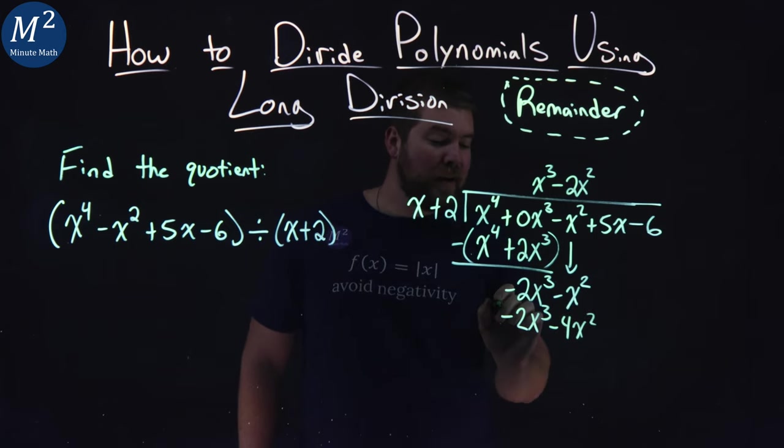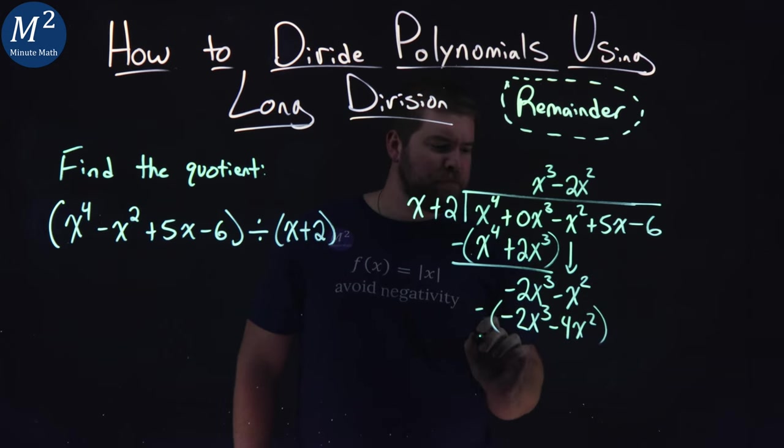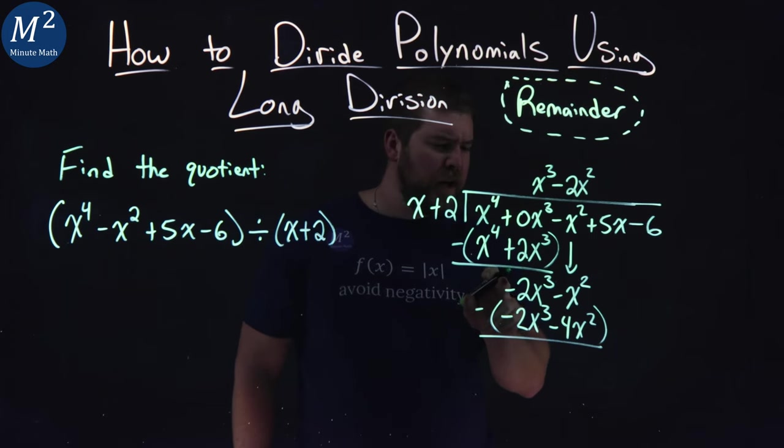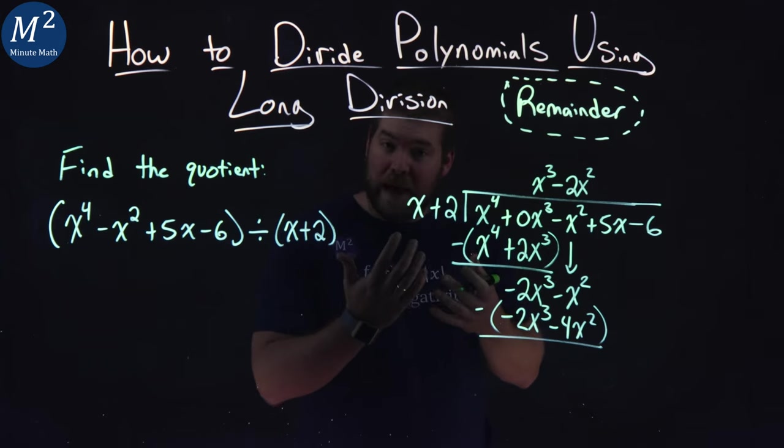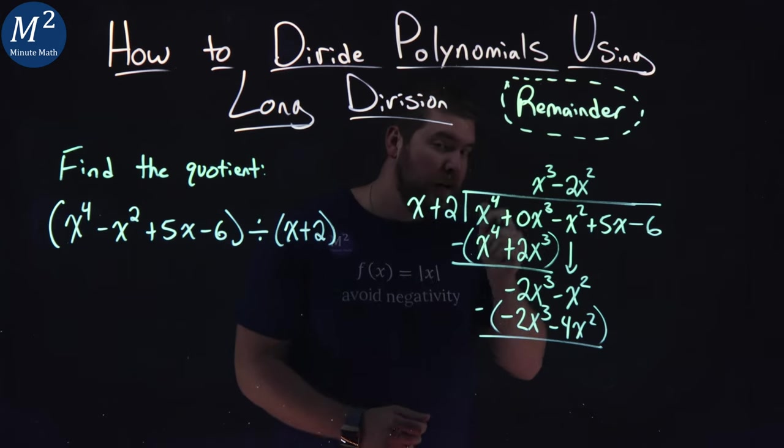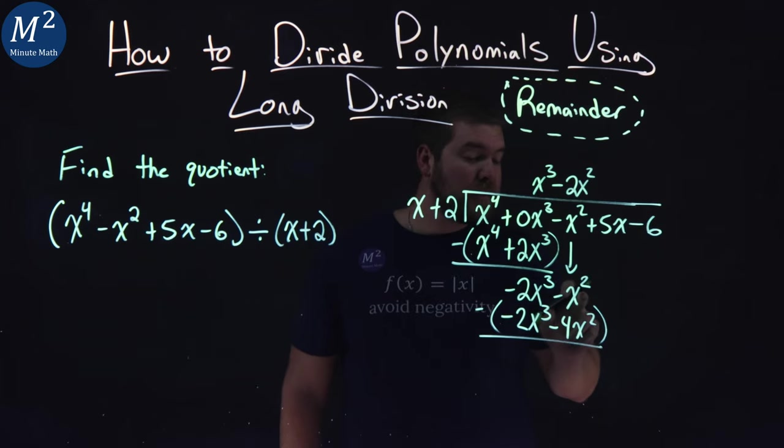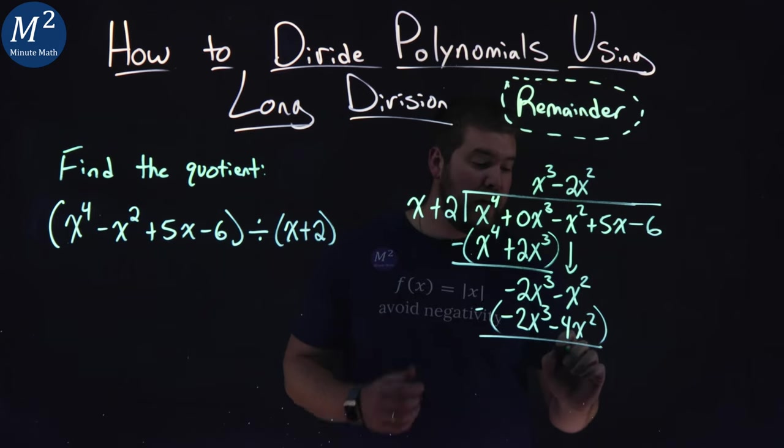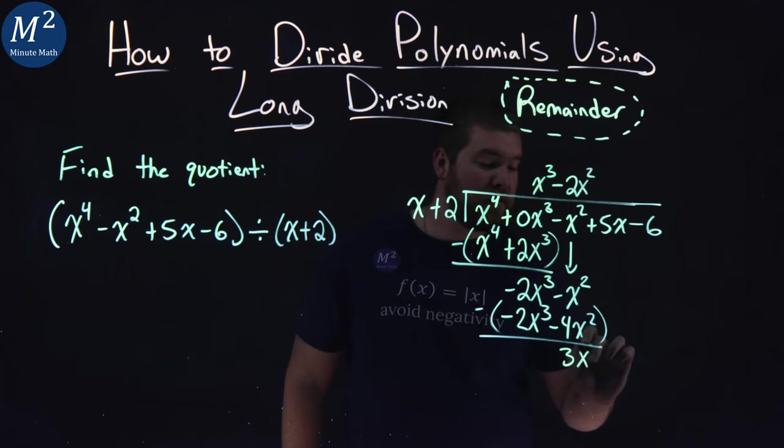Now we want to subtract. We distribute that minus sign to both parts as we go. Negative 2x to the third minus negative 2x to the third, or adding that, gets us 0. We're good. Negative x squared minus negative 4x squared is like adding 4x squared, and so we're left with 3x squared. We now need to bring down the next part, plus 5x.